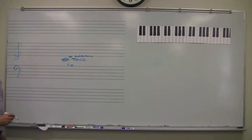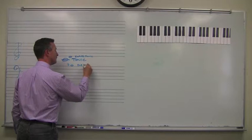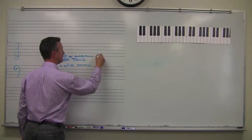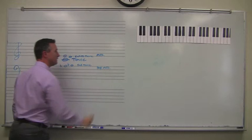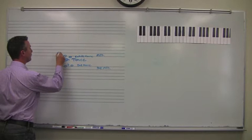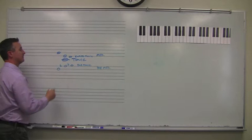Then we have the supertonic, which is a whole step above. Remember, it comes from the natural minor. Then we have the mediant, a third above. We have the submediant. Then we have the subdominant.